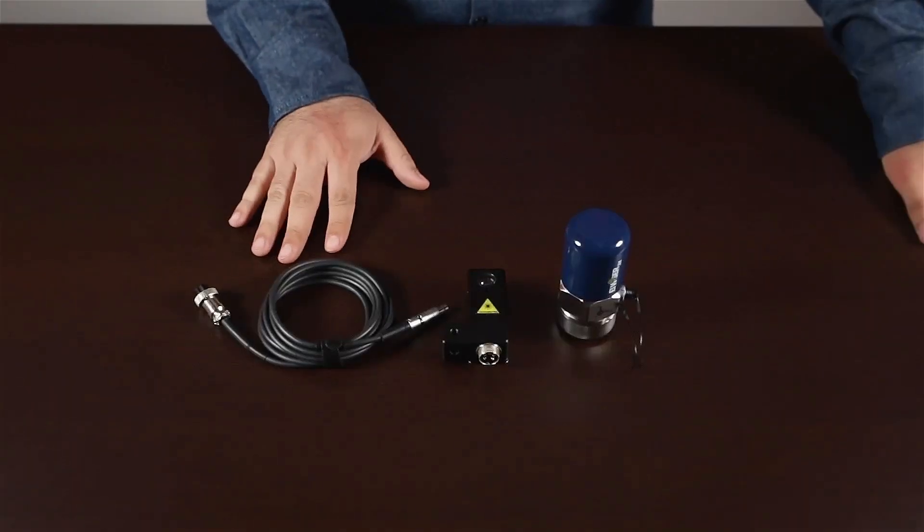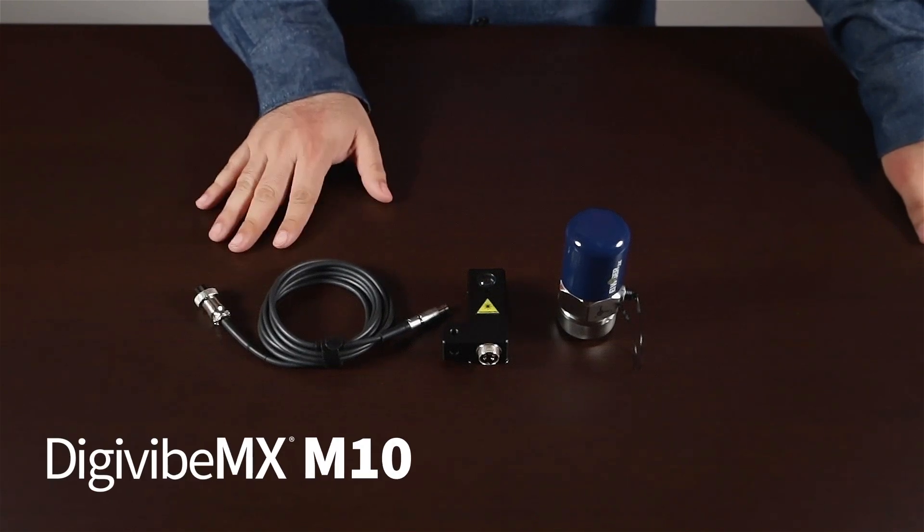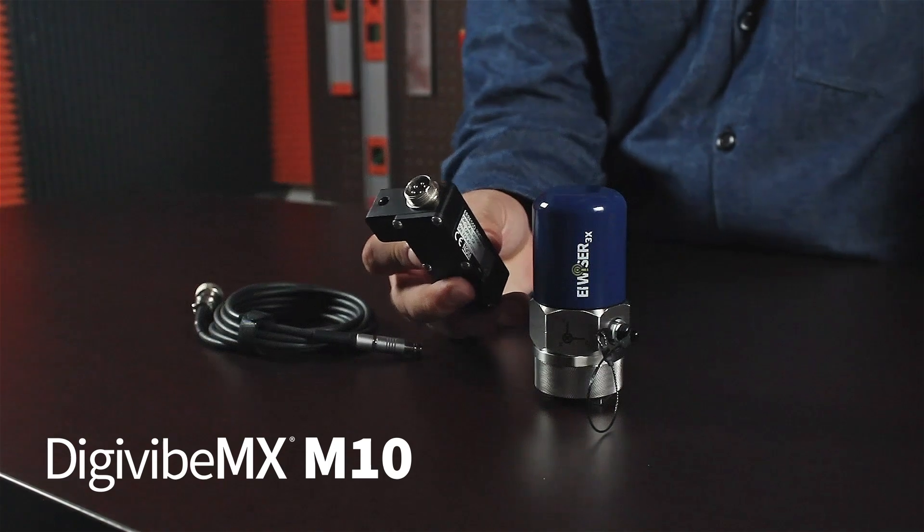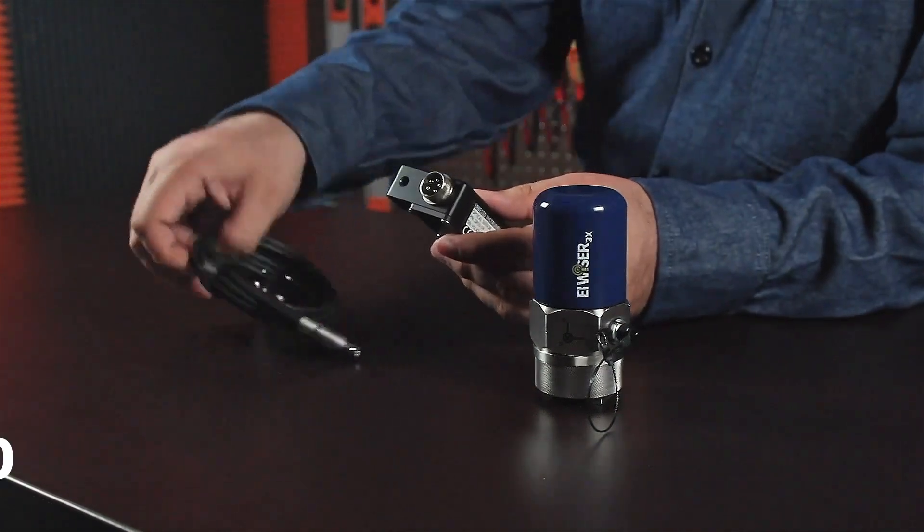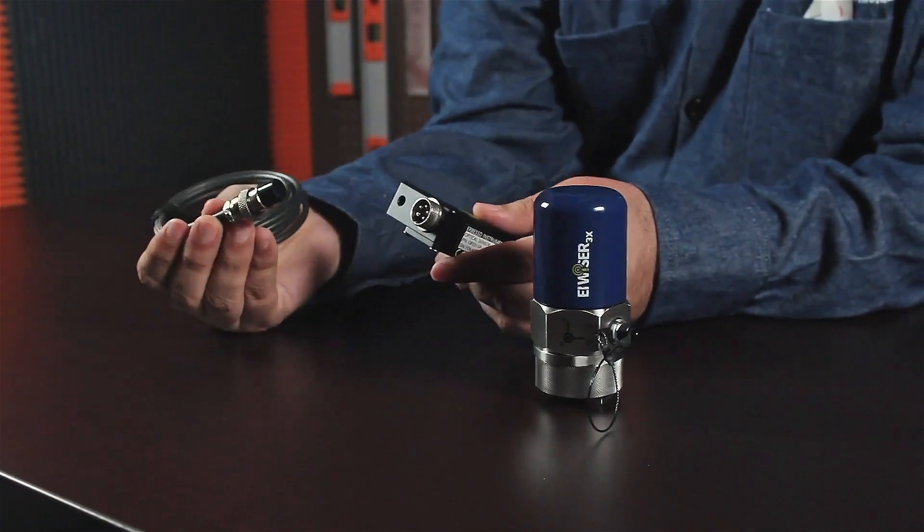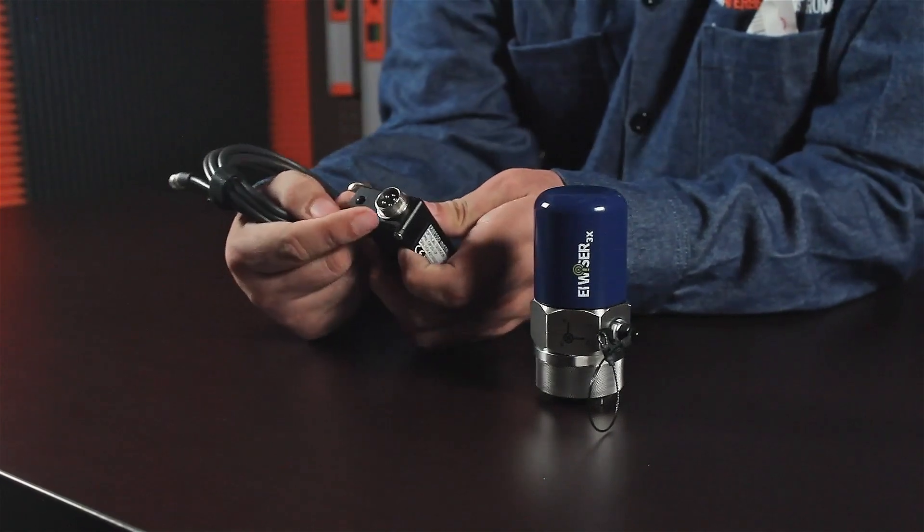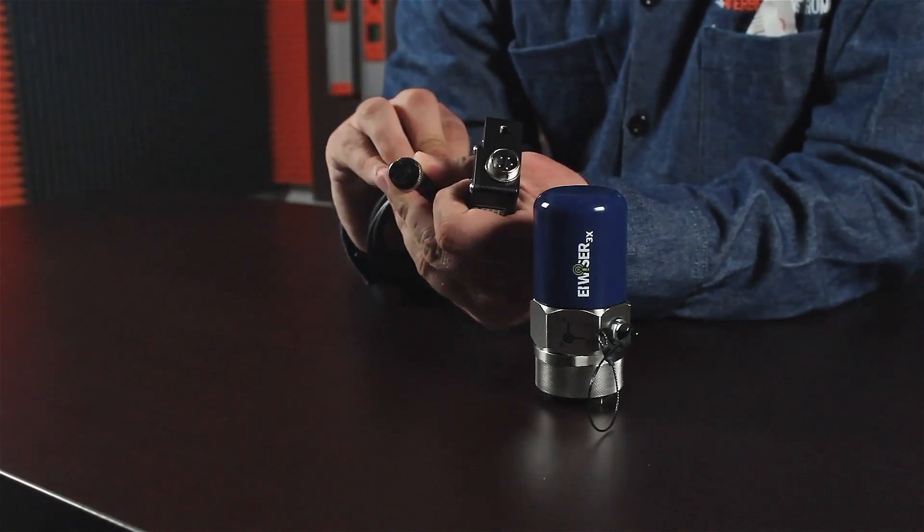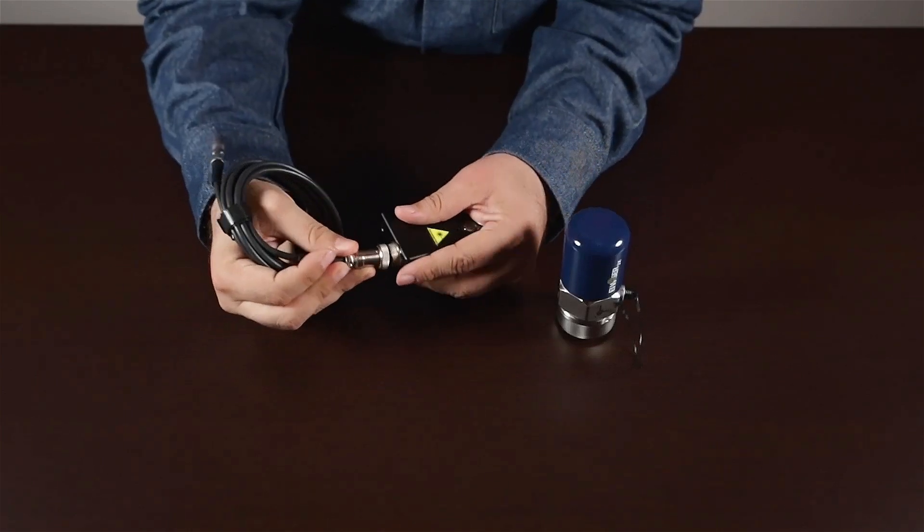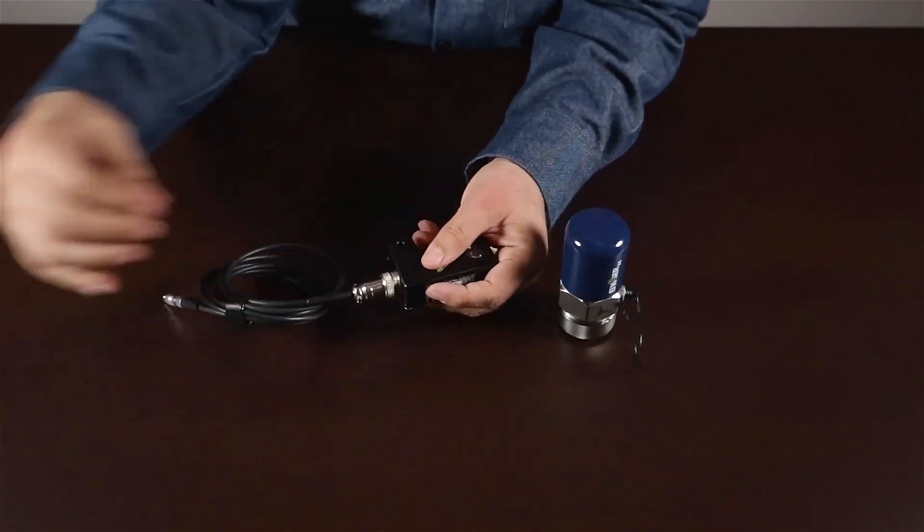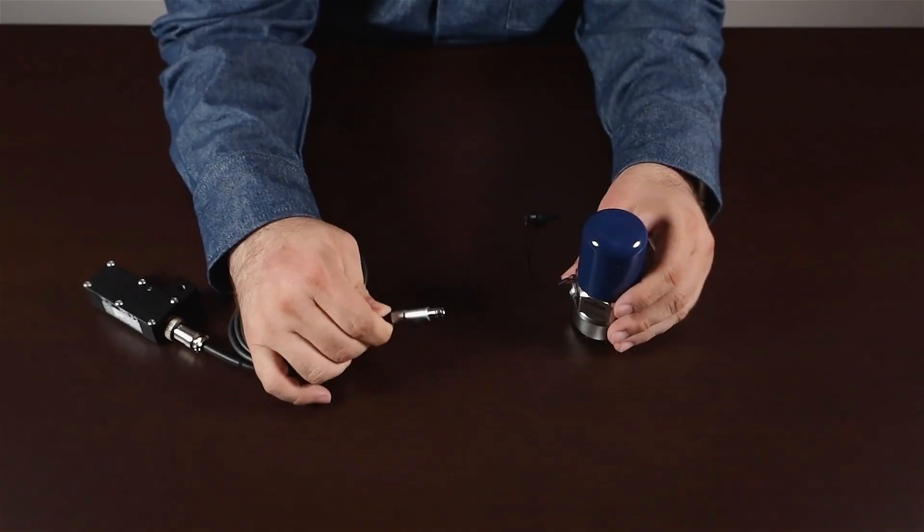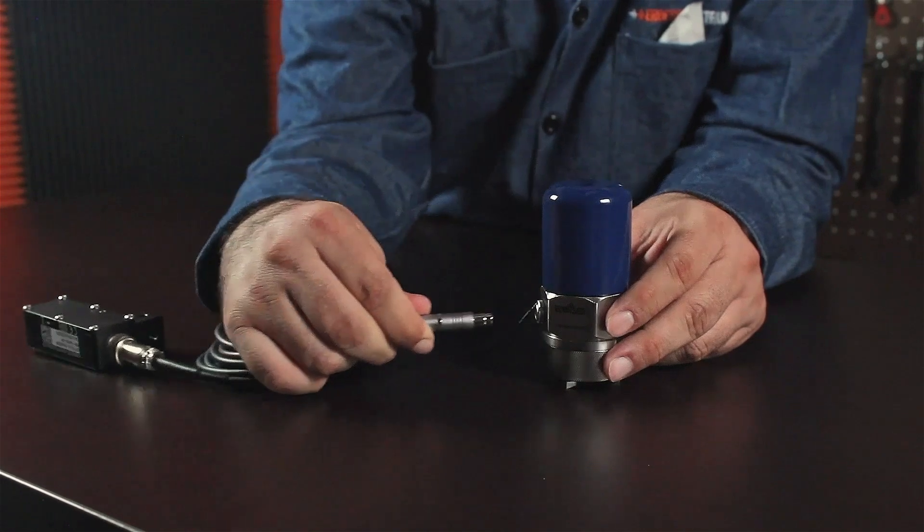If you purchase the Wiser 3X with the DigiVibe M10 version, it includes a laser tachometer. The laser tachometer has a five-pin connector and comes with its respective cable. To connect it, simply align the five pins. Ensure that the part with the stop aligns with the tab on the connector. Secure it well in the metal thread to the connector. To connect it to the Wiser, match the red dot on the tachometer with the red dot on the Wiser.